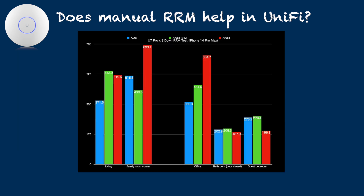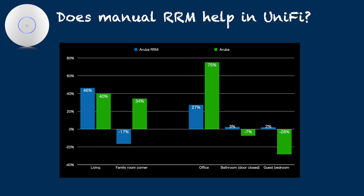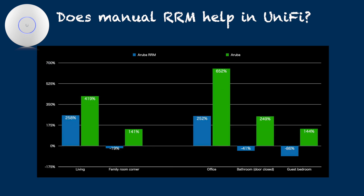Blue is the automatic setting of the U7 Pro. Green is U7 Pro with Aruba RRM parameters applied. Red is the HP Aruba AP555 setup test result shown as reference. Looking at relative gain or loss of throughput compared to the auto setting: other than in the family room corner where there was a 17% throughput loss from auto setting, everywhere else had either the same or improved download throughput, with a maximum gain as high as 46% in the living room. For upload, the relative change was far more significant — in some areas over 250% gain, but three areas showed throughput loss as large as 86%.